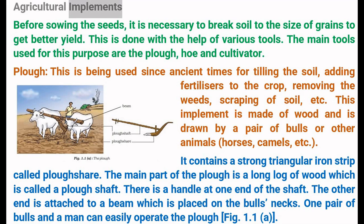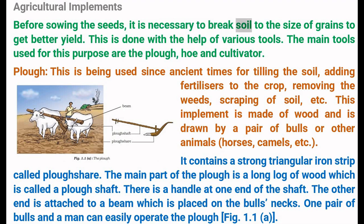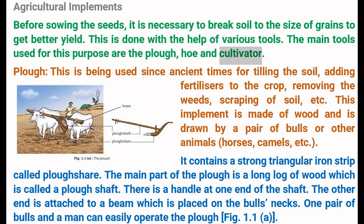Agricultural Implements. Before sowing the seeds, it is necessary to break soil to the size of grains to get a better yield. This is done with the help of various tools. The main tools used for this purpose are the plow, hoe and cultivator.